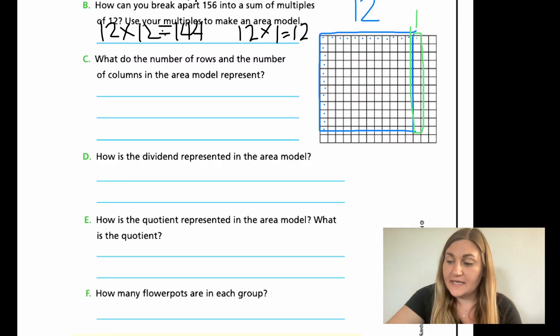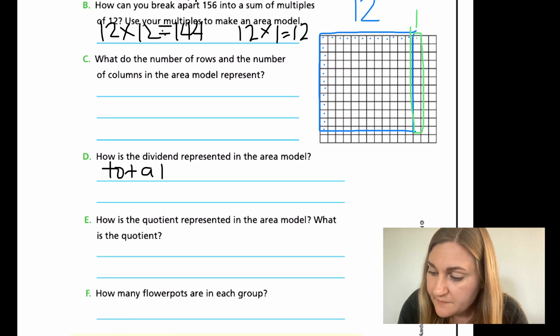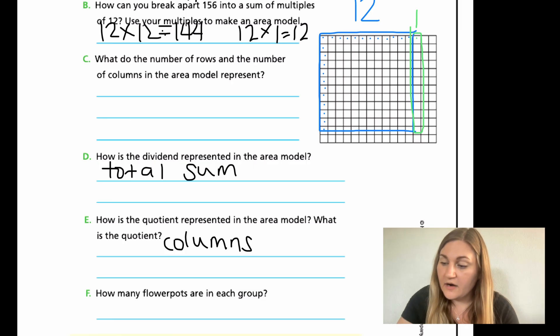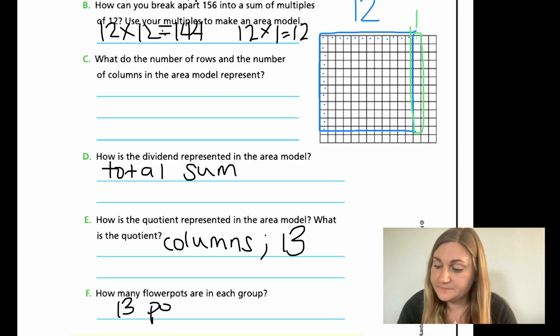All right. So, for dividend, that is the total sum, right? So, how is the dividend represented in the area model? That would be the total or the sum of the squares. So, again, I want you to be writing complete sentences as you are practicing. But for right now, just to give you where I'm going, I'm just going to write total sum. For E, what is the quotient represented in the area model? The quotient is the columns. All right. And then what is the quotient? That's the 13. The amount of columns is 13. And then for F, how many flower pots are in each group? We do know that if there's 12 equal groups, we are going to have 13 flower pots. And again, all of these questions should be answered in complete sentences.